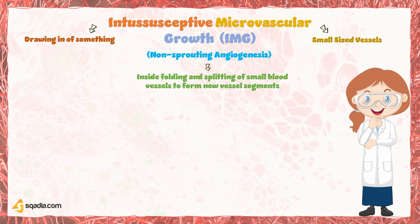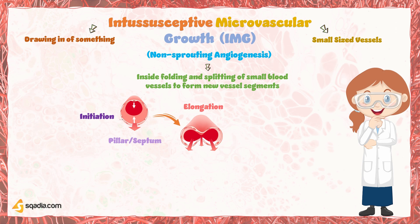What happens in IMG is that a blood vessel splits into two. The process can be broken down into three stages. First, there's initiation, where a small transverse pillar or septum appears in the lumen of a pre-existing blood vessel, dividing it into two compartments, each containing a separate blood flow. Next, there's elongation, where the transverse pillar grows in length and width, eventually extending across the entire diameter of the vessel — like the pillar is building a wall between the two compartments. This process involves endothelial cells and extracellular matrix proteins, which act as a physical barrier between the two compartments.